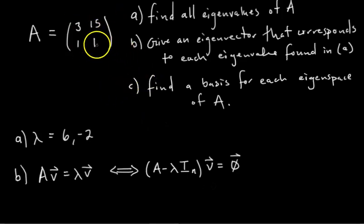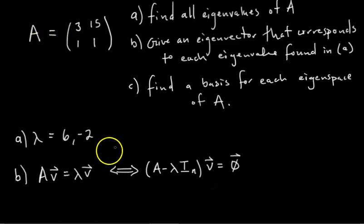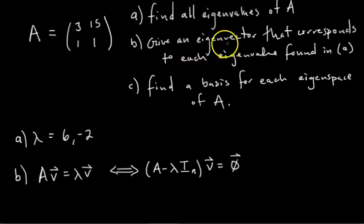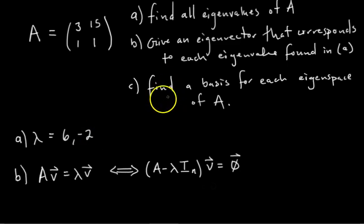We have this problem where we're given a 2x2 matrix, and we want to find the eigenvalues, eigenvectors, and a basis for each eigenspace of A. In the last video, we solved Part A and got the eigenvalues of this 2x2 matrix A to be 6 and negative 2. Now for Part B, we want to give an example of an eigenvector of A that has eigenvalue 6, and one that has eigenvalue negative 2.